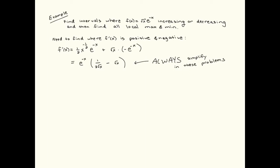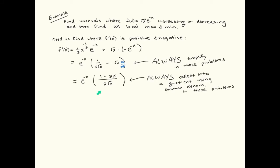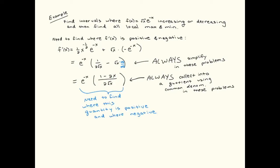Let's also get a common denominator. The common denominator is two times the square root of x. We get this quantity, which is the most ideal for any of these problems — a quotient with a thing in the numerator and a thing in the denominator. We need to find where this quantity is positive and where it is negative, so let's analyze it piece by piece.